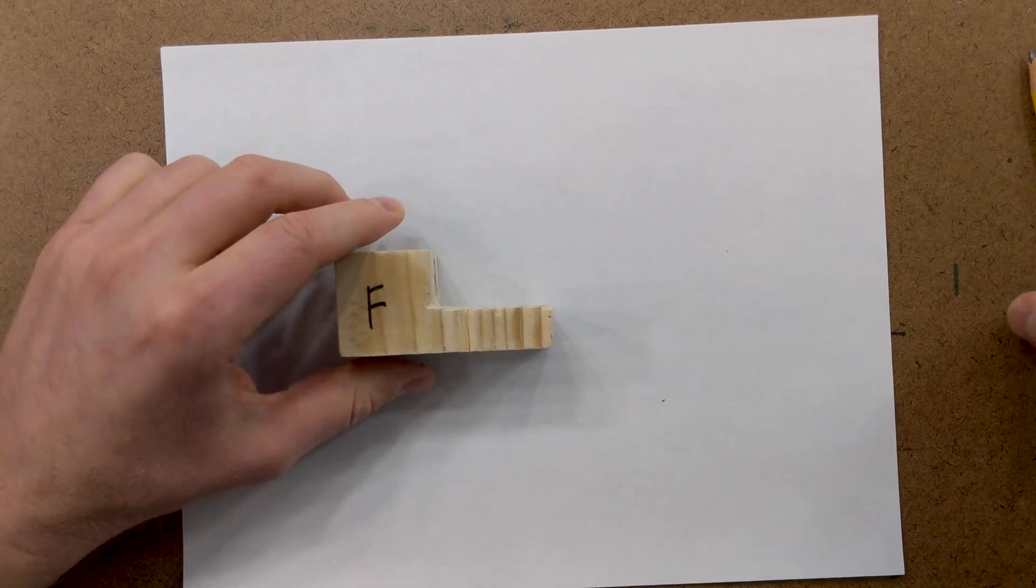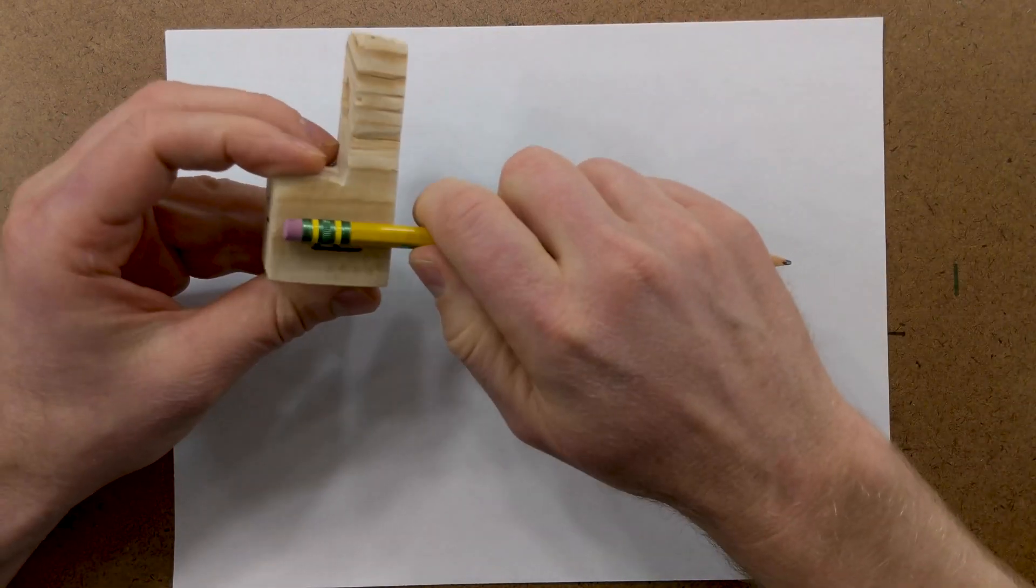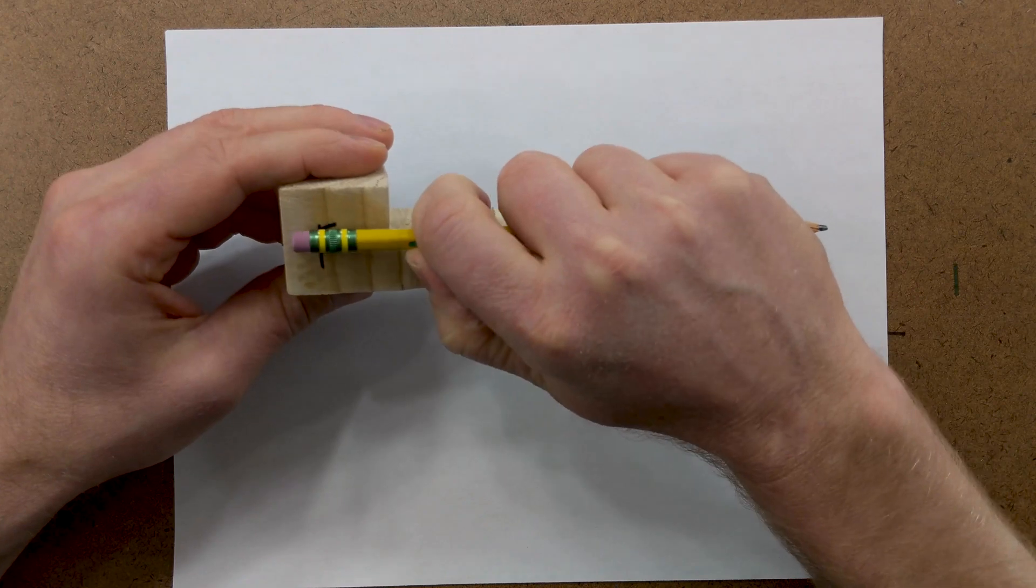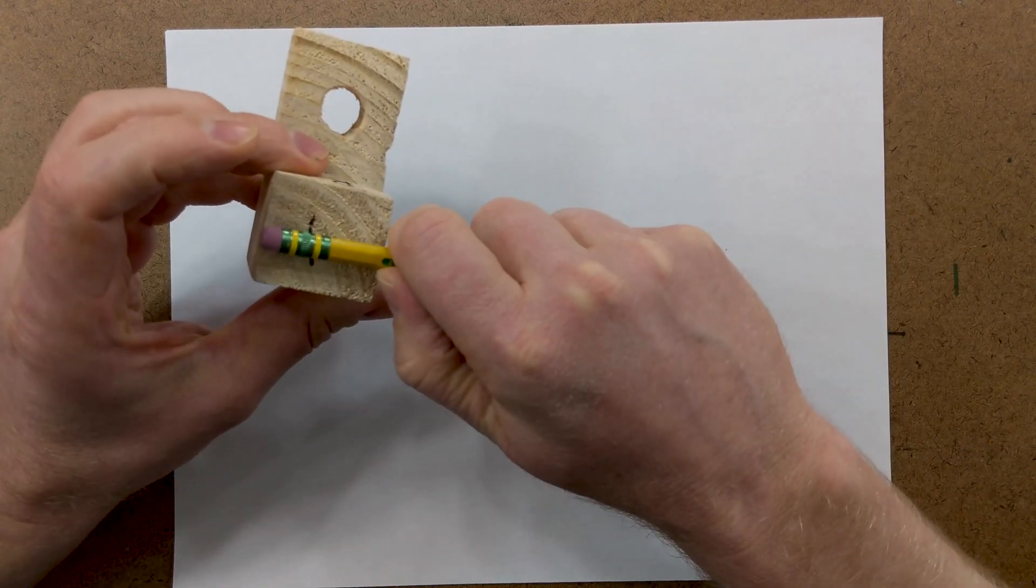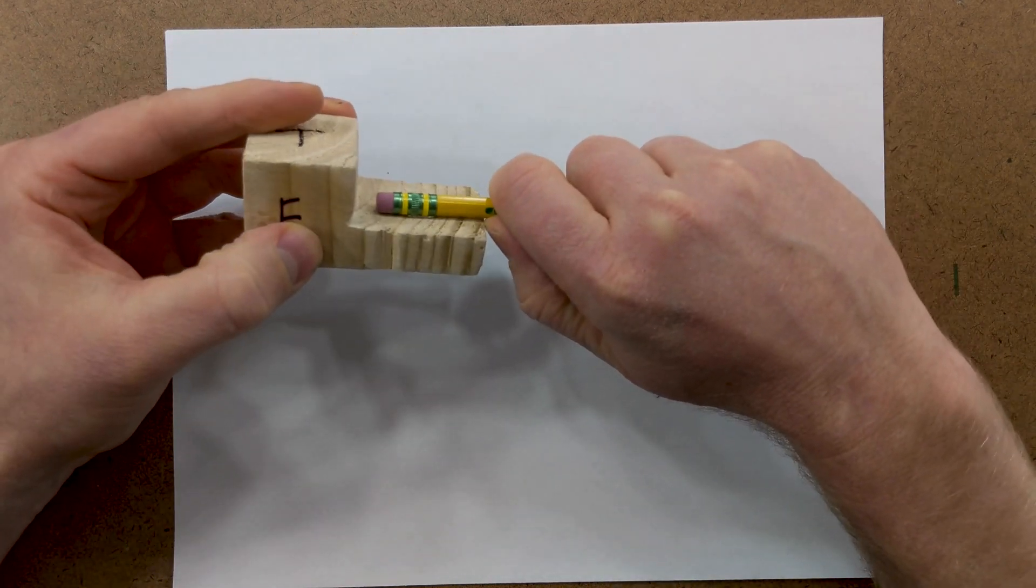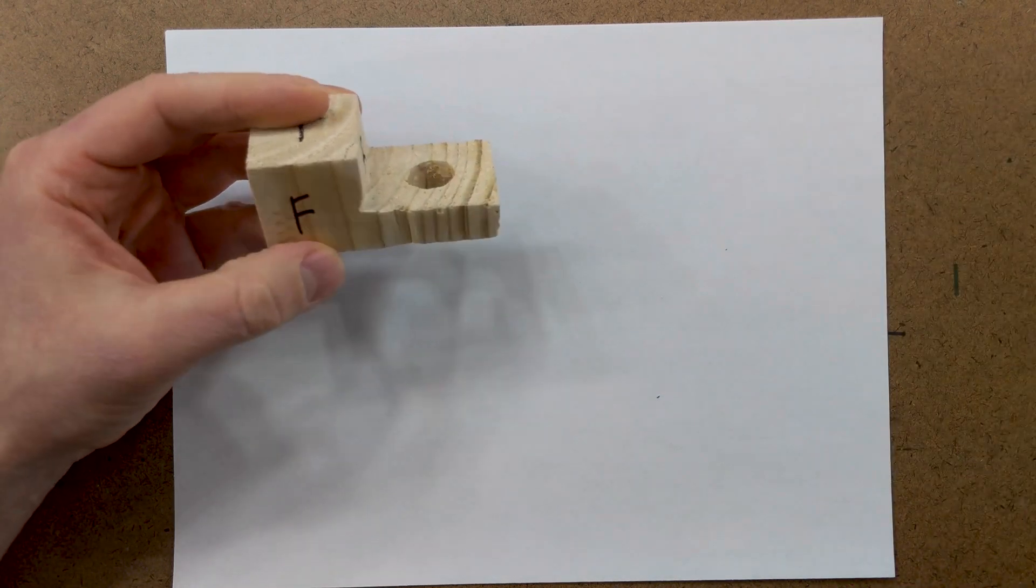The next thing to do is just to get some general proportions of your object. If I look here, I'm approximately two units this way and one unit here, and it's a little more than a half going across there.